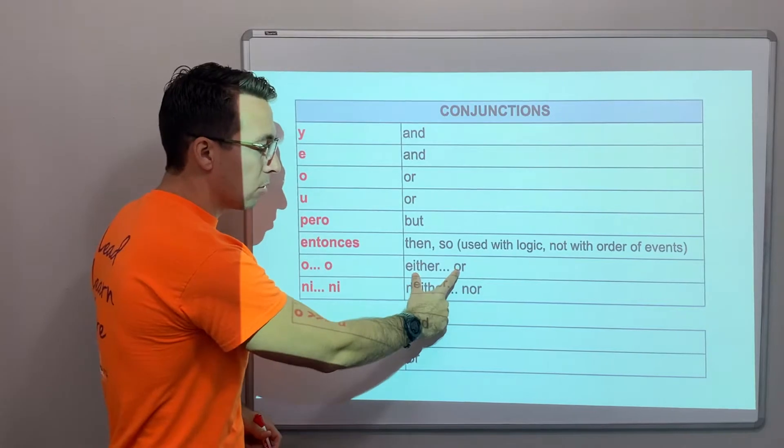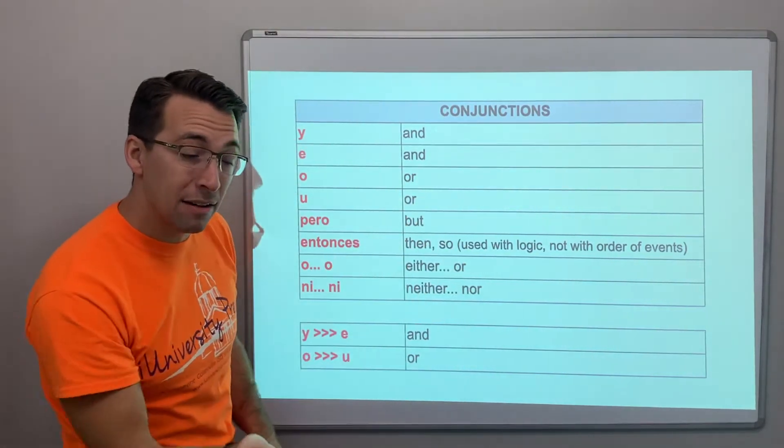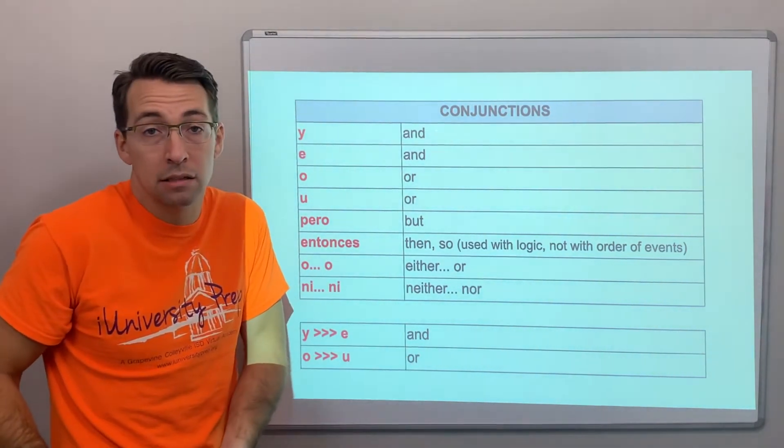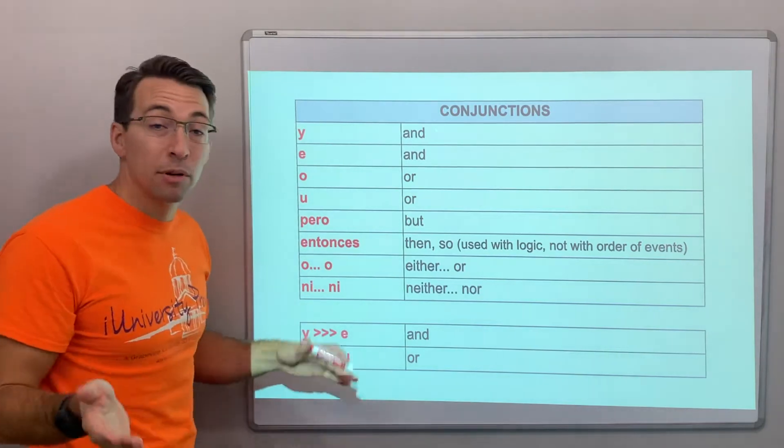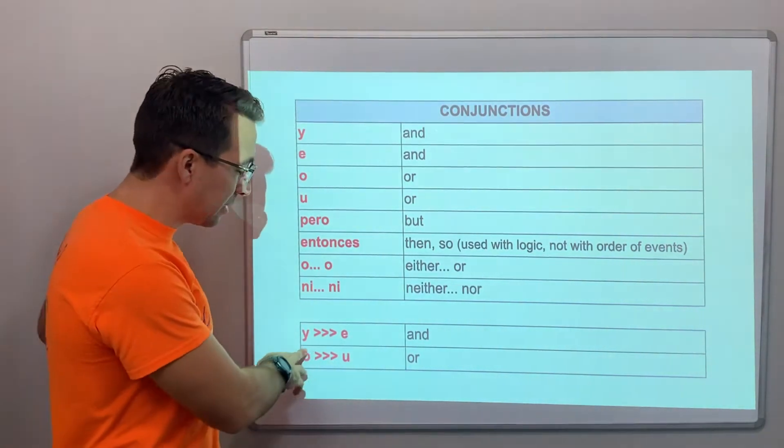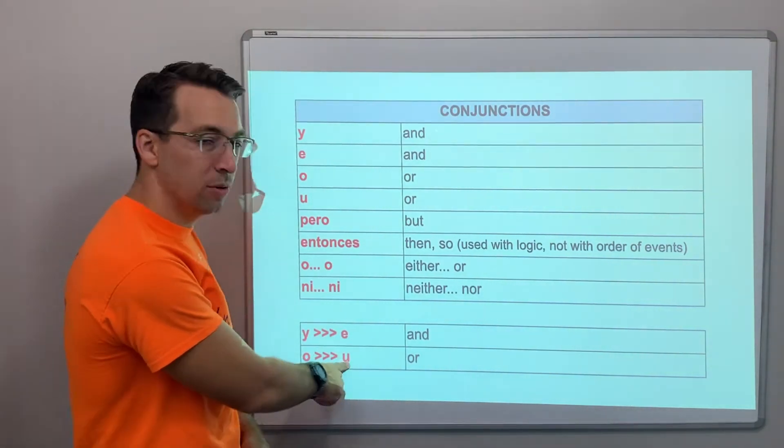So remember, in English we go either or, in Spanish, or in English also, for the negative, I like neither to swim in rivers nor swim in lakes, which isn't true, I like both. And then, check this out, a lot of today's video, this video is about y, when does it change to e, when does o change to u?